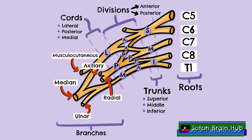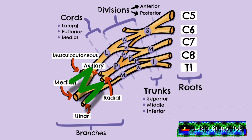The medial cord divides into its terminal branch, the ulnar nerve, which is broadly responsible for innervating some of the medial extrinsic and intrinsic flexors of the hand. The medial cord also contributes to the median nerve alongside the lateral cord. The terminal branches of the lateral and medial cords form a characteristic M shape, which is one of the most identifiable aspects of the brachial plexus and an important anatomical landmark.